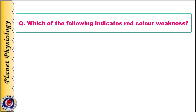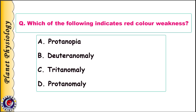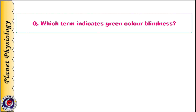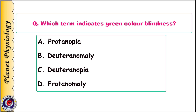Which of the following indicates red color weakness? A. Protanopia; B. Deuteranomaly; C. Tritanomaly; D. Protanomaly. Which term indicates green color blindness? A. Protanopia; B. Deuteranomaly; C. Deuteranopia; D. Protanomaly.